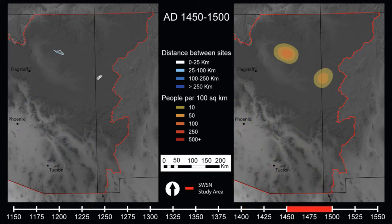Finally, by the AD 1450 to 1500 interval, large sedentary populations are limited to those areas around the contemporary Pueblo communities of Hopi and Zuni, both of which persist to this day.